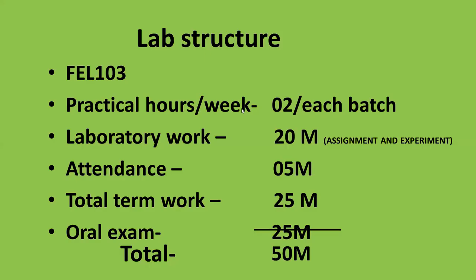For the lab structure, the course code is FEL 103, with practical hours of two hours per batch. Laboratory work carries 20 marks, divided into assignments and experiments. Assignments are based on the theory syllabus — you will be given problems to solve for each module. Attendance carries 5 marks, so total term work is 25 marks. The final oral exam is 25 marks, and total laboratory weightage is 25 plus 25, equaling 50 marks. The oral exam covers both theory syllabus and practicals.